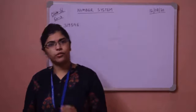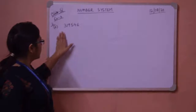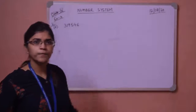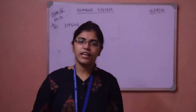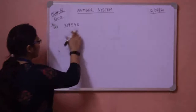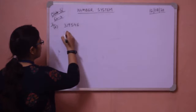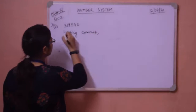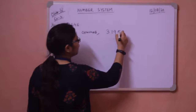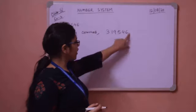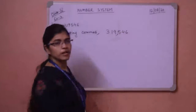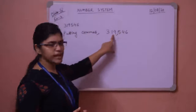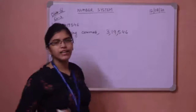In the Indian place value system. So sum number 2D, this is the number and you have to write it in the Indian system. First I am putting a comma. The digits are 3, 1, 9, 5, 4, 6. For the Indian system, first you have to leave 3 digits and put the first comma. After that you start leaving 2 digits — leaving 9 and 1 — and put the next comma.